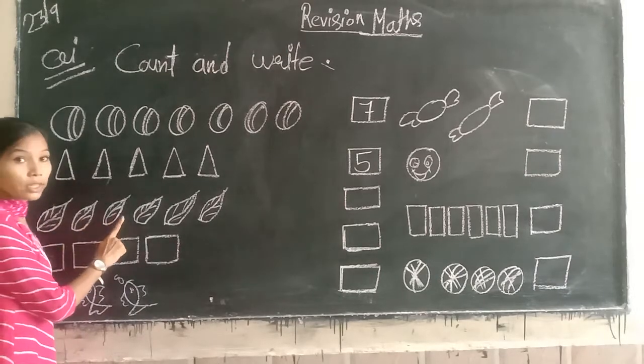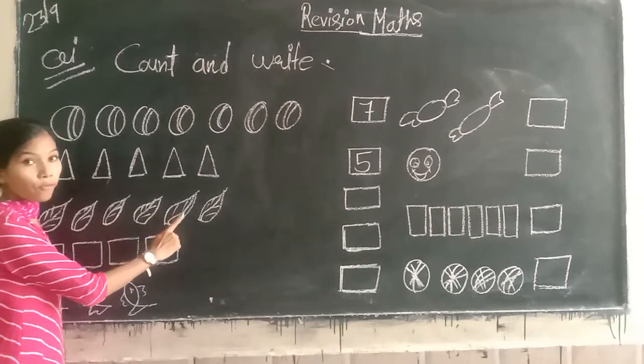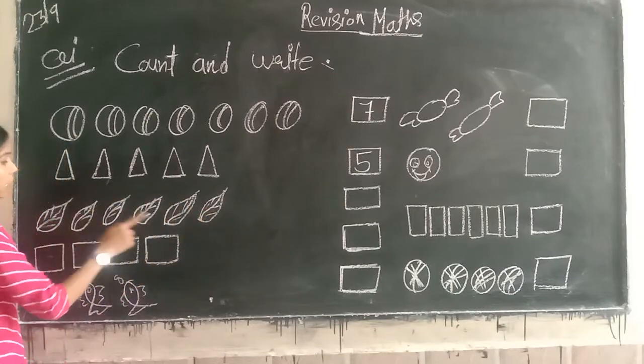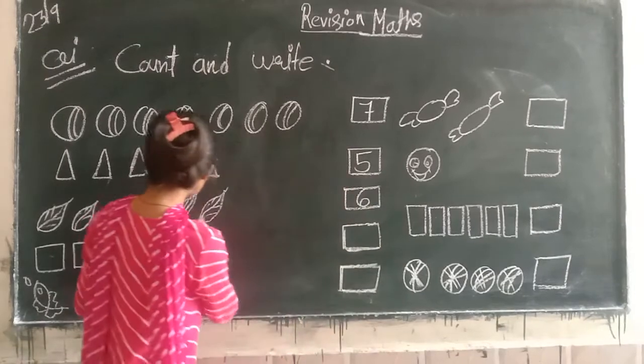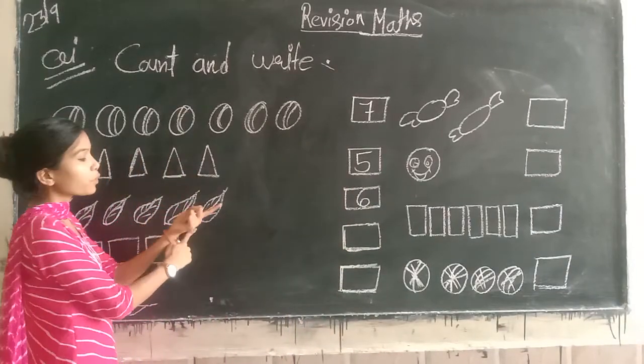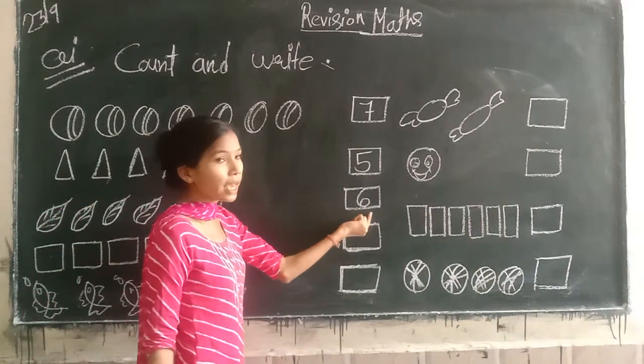We can count the leaves. One, two, three, four, five, six. Leaves, how many? Six. We write number six.